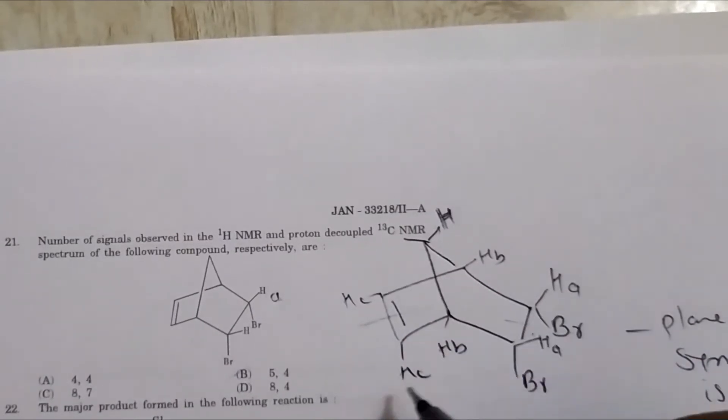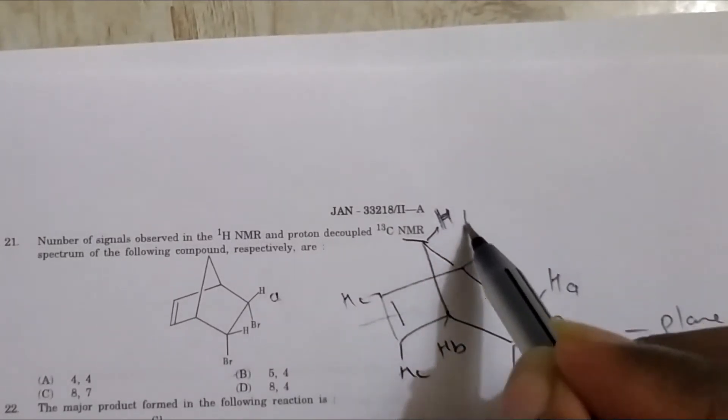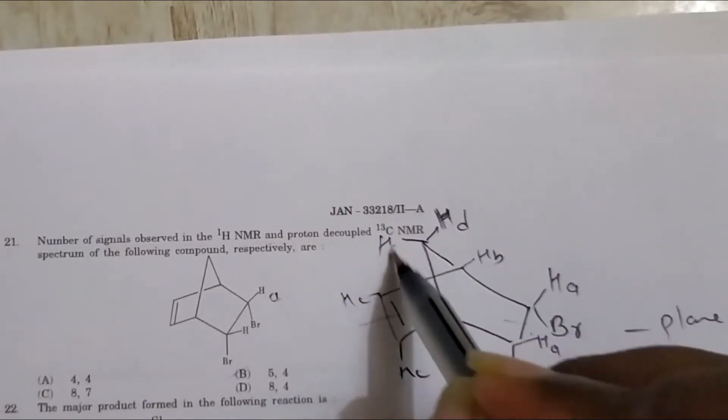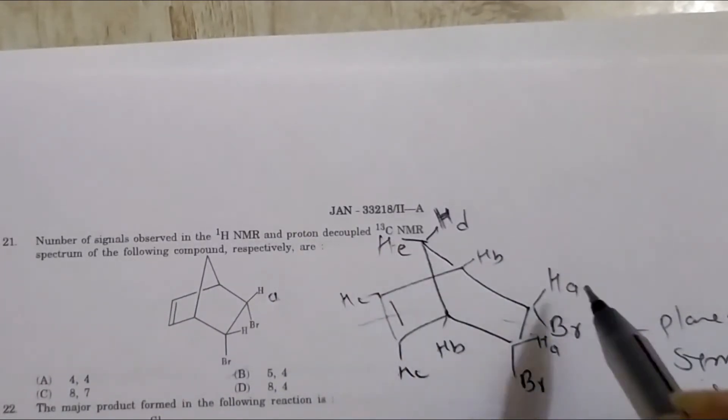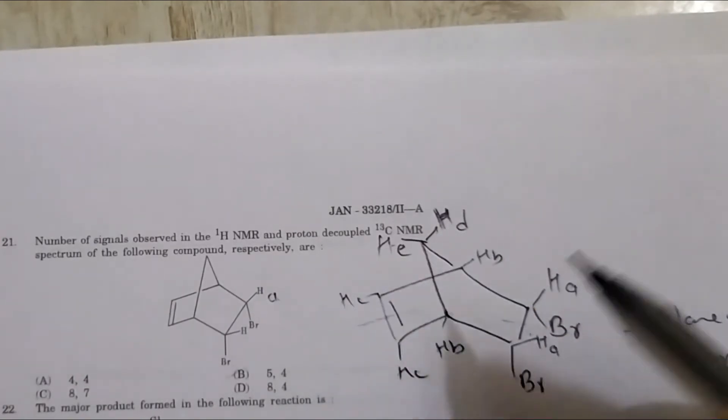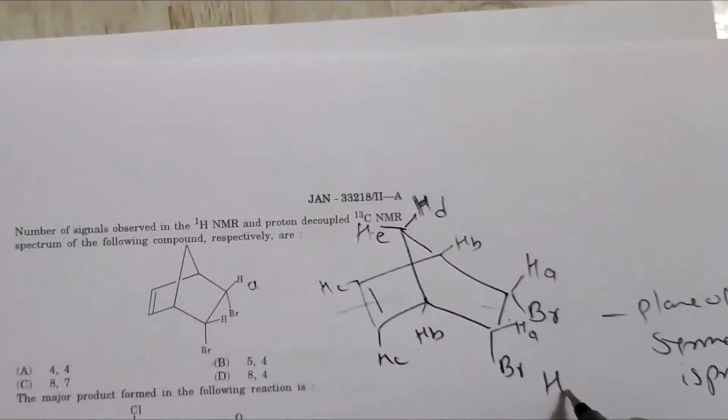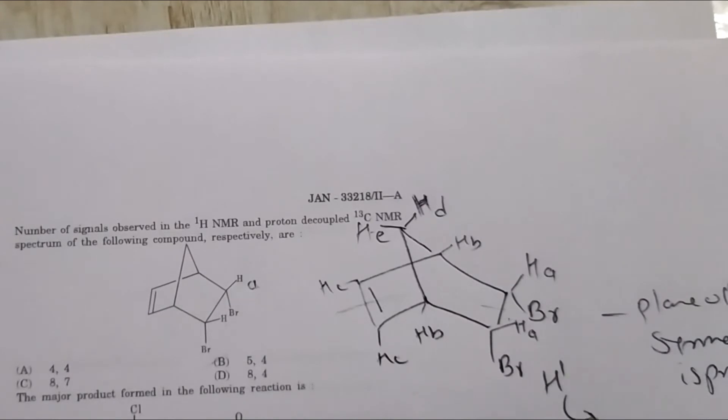So this is A, B, C, this is D, and this is HE. So 1, 2, 3, 4, 5 - there are in H1, 5 signals, okay.